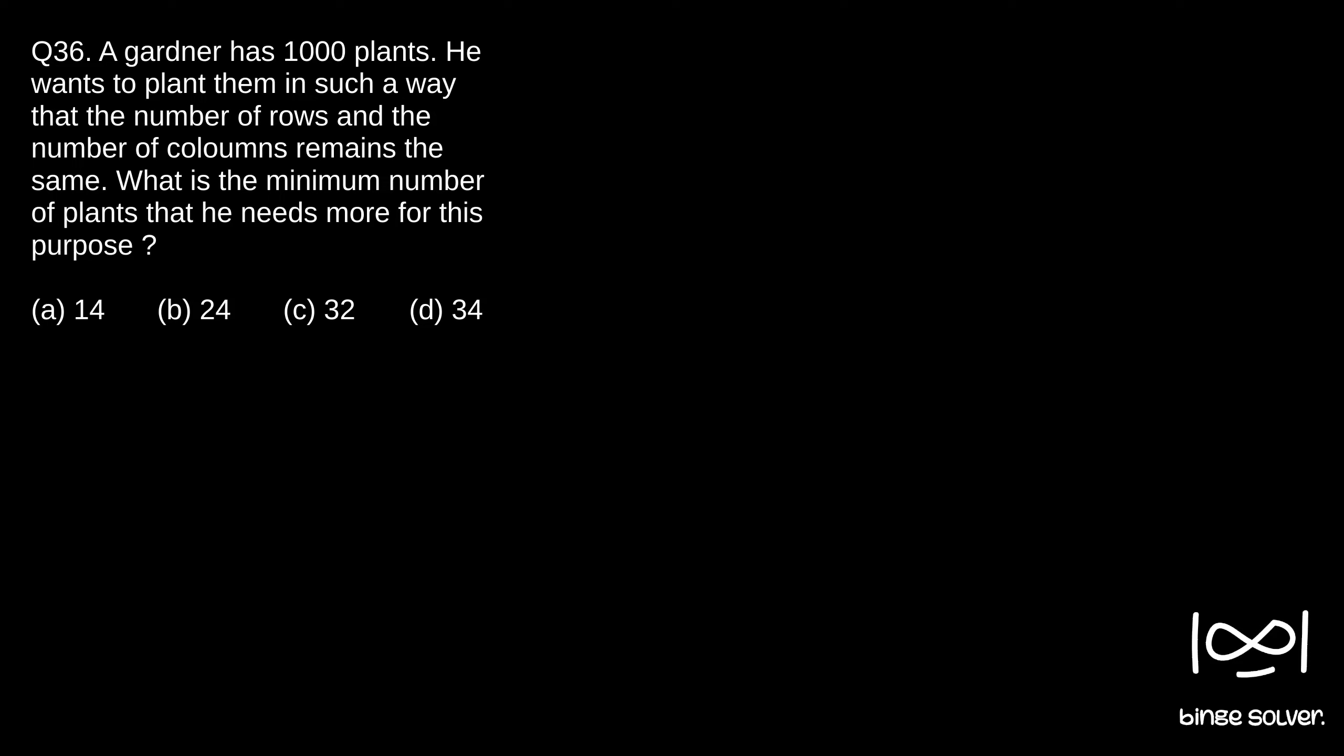So basically, if the number of rows and columns is the same, then x times x will become the total number of plants. So that is x². So the question asks which number is a perfect square just above 1000?